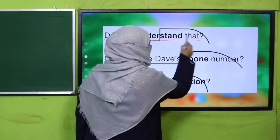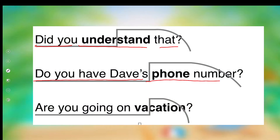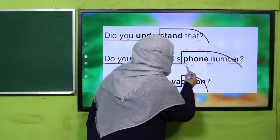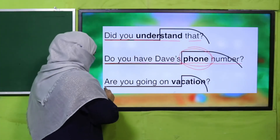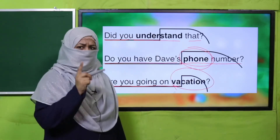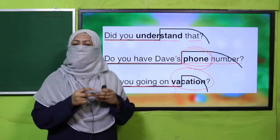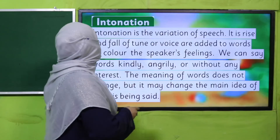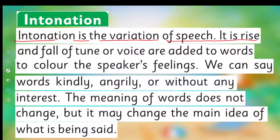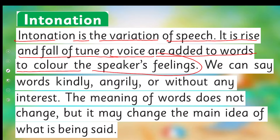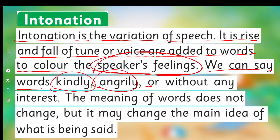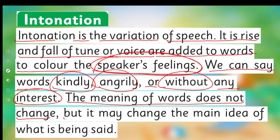'Do you have Dave's phone number?' — because I want the phone number, my stress is on 'phone number.' 'Are you going on vacation?' — this is how we make different statements. Intonation is the variation of speech — it is the rise and fall in the tone of your voice added to words to color the speaker's feeling. We can say words kindly, angrily, or without interest; the meaning of the word does not change but it may change the main idea.